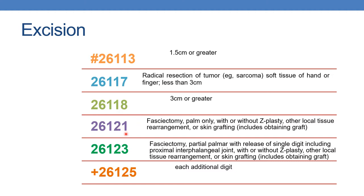The next is 26121: fasciectomy, palm only, with or without Z-plasty, other local tissue rearrangement or skin grafting — those are included. Next is 26123: fasciectomy, partial, palmar with release of single digit, including proximal interphalangeal joint, with or without Z-plasty or other local tissue rearrangement or skin grafting. For single digit, report 26123. For each additional digit, report add-on code 26125.